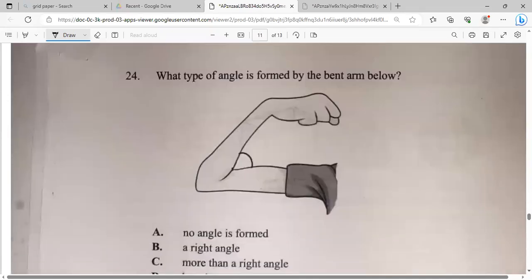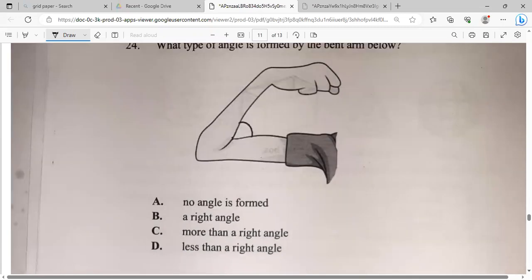What type of angle is formed by the bent arm below? No angle is formed. A right angle. More than a right angle. Or less than a right angle. Well, we know that a right angle is like this. So what we could do is draw a line here to kind of give us an idea. You know, for it to be a right angle, the angle has to be straight. So we can clearly see that it's an acute. It's less than 90. So that would be D.